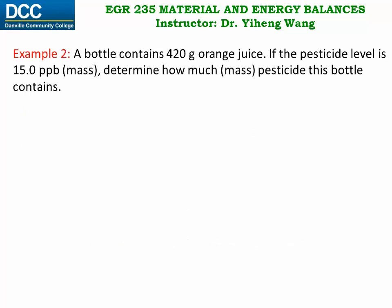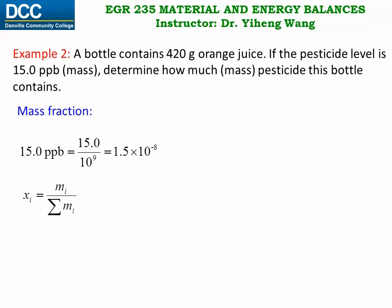Let's look at this example. We have 420 grams of orange juice in a bottle, and the pesticide level is 15.0 PPB by mass. We need to determine the total mass of pesticide inside the bottle. The pesticide level of 15.0 PPB means 15.0 parts per billion, or 1.5 times 10 to the negative eighth power. By definition, mass fraction equals the mass of the component divided by the total mass of 420 grams. Therefore, the mass of pesticide is 420 grams times 1.5×10⁻⁸, which equals 6.3×10⁻⁶ grams, or 6.3 micrograms.